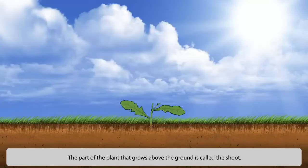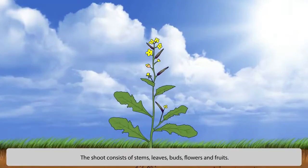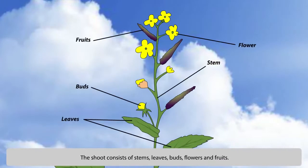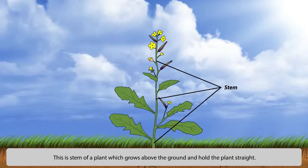The part of the plant that grows above the ground is called the shoot. The shoot consists of stems, leaves, buds, flowers and fruits. The stem of a plant grows above the ground and holds the plant straight.